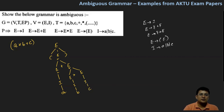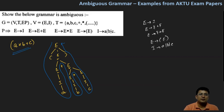So let's see if this gives you the same thing. This is: opening bracket, then A, then plus, then B, then multiplication sign, then C, then closing bracket. So this is giving you the same string. This derivation is correct.